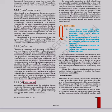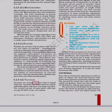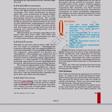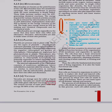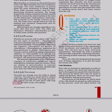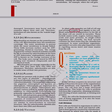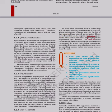5.2.5.6 Vacuoles: Vacuoles are storage sacks for solid or liquid contents. Vacuoles are small-sized in animal cells while plant cells have very large vacuoles. The central vacuole of some plant cells may occupy 50–90% of the cell volume. In plant cells, vacuoles are full of cell sap and provide turgidity and rigidity to the cell. Many substances of importance in the life of the plant cell are stored in vacuoles, including amino acids, sugars, various organic acids and some proteins. In single-celled organisms like amoeba, the food vacuole contains the food items that the amoeba has consumed. In some unicellular organisms, specialized vacuoles also play important roles in expelling excess water and some wastes from the cell.